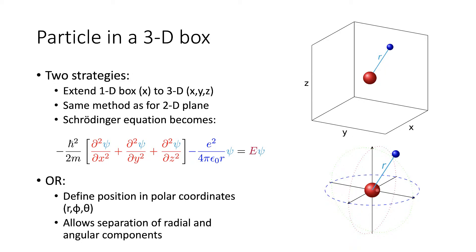This allows us to separate our radial and angular components, which is exceptionally helpful. Looking at the Schrödinger equation, we have a potential energy term which conforms to a radius. The angles, at a fixed radius, describe the motion of the particle around the nucleus. So it allows us to completely separate the Coulombic potential from the kinetic energy — the kinetic energy is effectively the angle of rotation, the rate at which the angles change, while the Coulombic potential is the rate at which the radius changes.